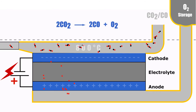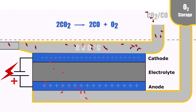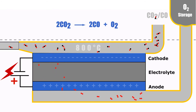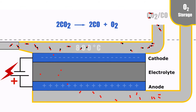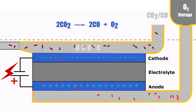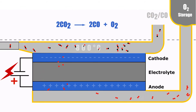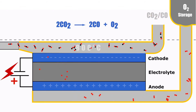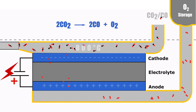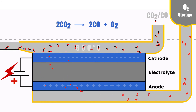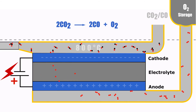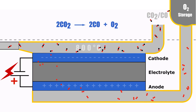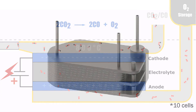Basically, one atom of oxygen is stripped from the carbon dioxide and set free. It is later combined with other free oxygen atoms to form O₂. The carbon monoxide is vented into the Martian atmosphere and the oxygen is temporarily stored.